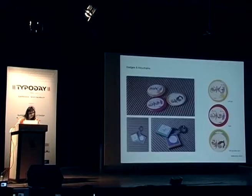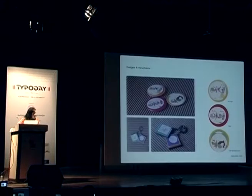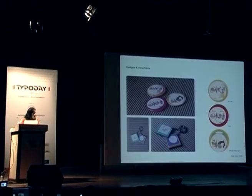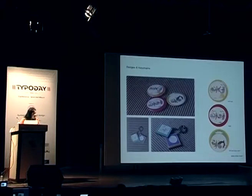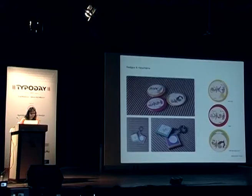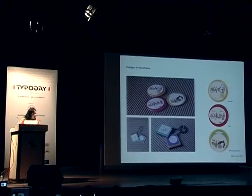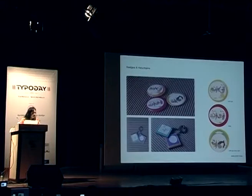The badges and keychains were also designed. The first badge reads 'Halo' — that means 'let's go' in Gujarati. The second badge reads 'Dobo' — that means 'mad' in Gujarati. The third badge reads 'Shu tu mane preem karse' — that means 'will you love me'.